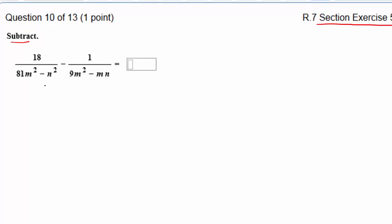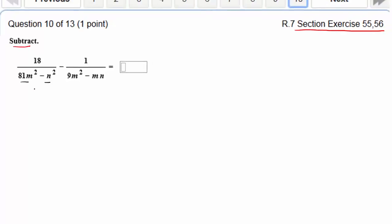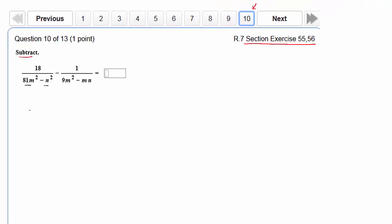You always look first to see what the greatest common factor of the two terms is, to see if there's anything in common you can pull out. There is nothing in this first denominator—this one has 81 and m squared, this one's n squared, there's nothing in common. So we turn to the fact that there are two terms, it's a binomial.